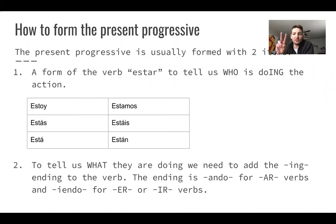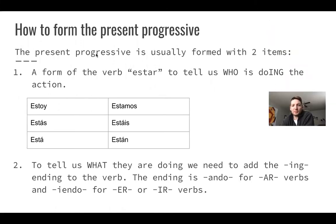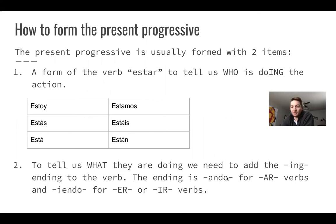So how to form the present progressive — there are two things that we need. The present progressive is usually formed with two items. The first is a form of the verb 'estar,' which tells us who is doing the action: estoy means 'I am,' estás means 'you are,' está means 'he or she is,' estamos means 'we are,' estáis means 'you guys' — si estuviéramos en España — and then están is 'they' or 'you guys' in the rest of the world. The second thing tells us what they are doing: we take our verb and add our I-N-G ending, which is -ando for an A-R verb, or -yendo for E-R or I-R verbs.